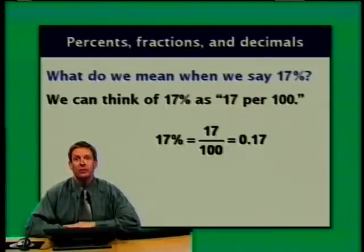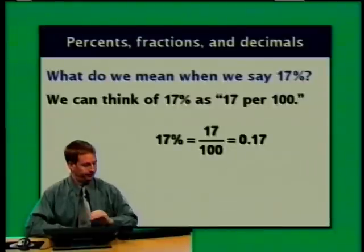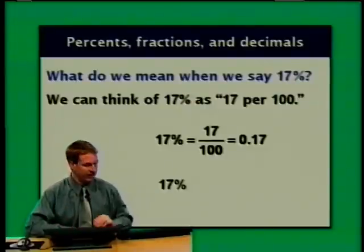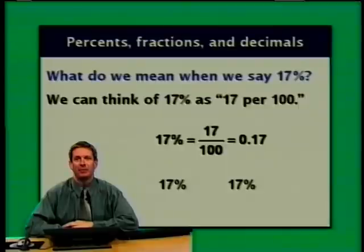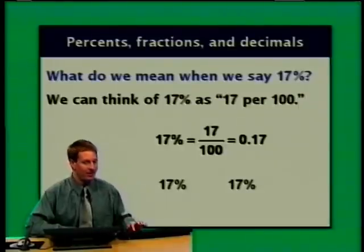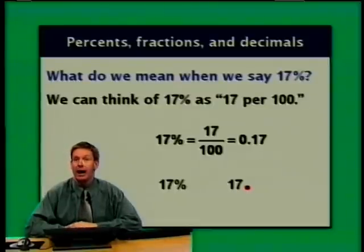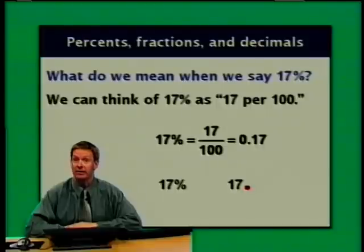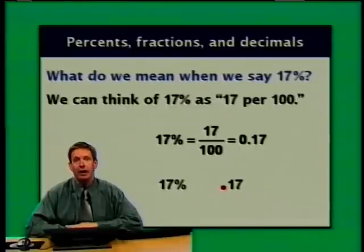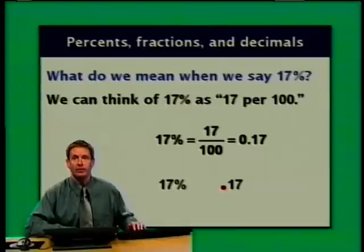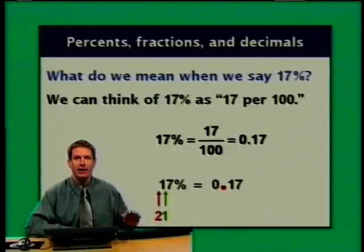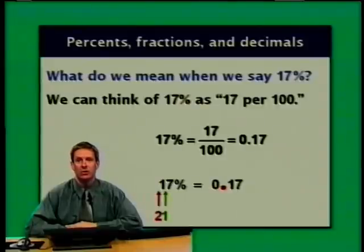Let's focus on the relationship between the percent and the decimal. We start with 17%, and for the decimal equivalent, I take the percent symbol and change it to a decimal point. The decimal equivalent of 17% is created by moving the decimal point after the 7 two places to the left. So when I take 17% and want the decimal equivalent, I move the decimal point one, two places to the left — establishing that 17% equals 0.17.